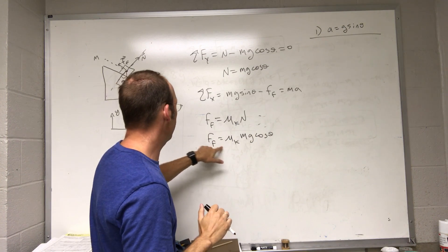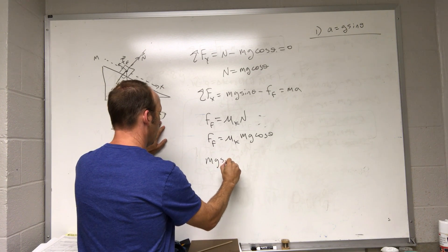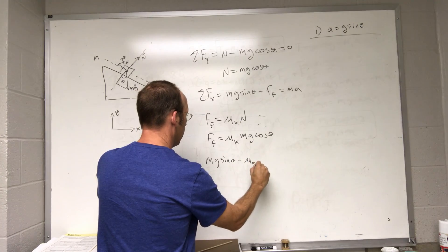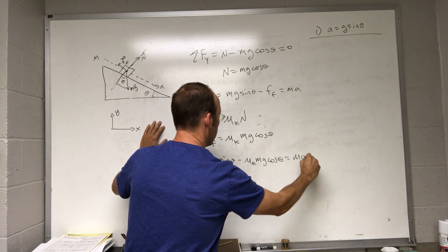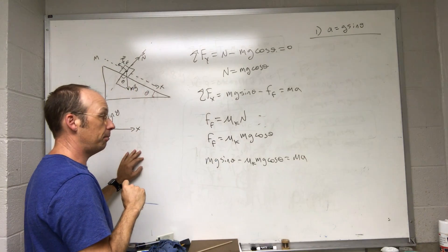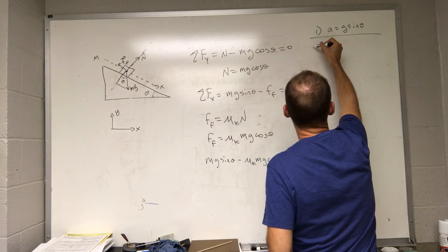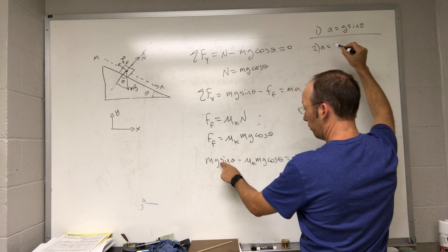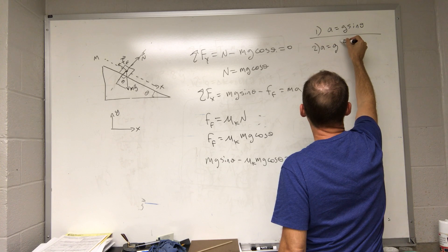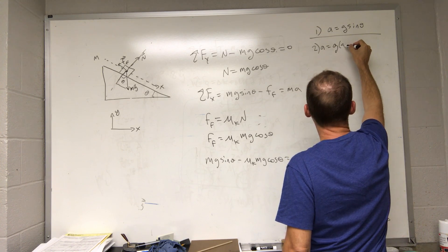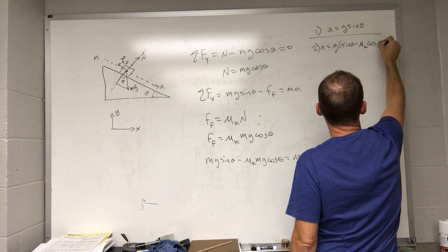So if I put this value in here, I get mg sine theta minus mu k mg cosine theta equals ma. I can divide both sides by m, and I get an expression for a. I get 2a equals, I'm actually going to factor out a g, just because I want to.